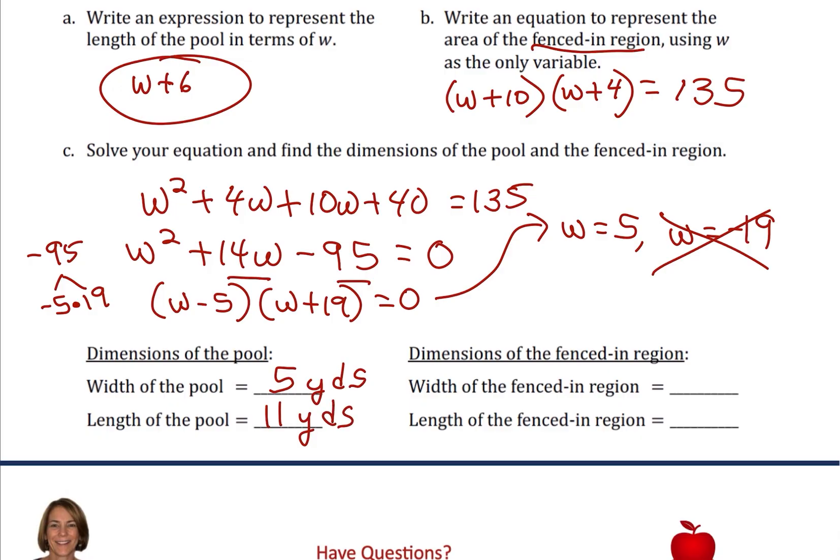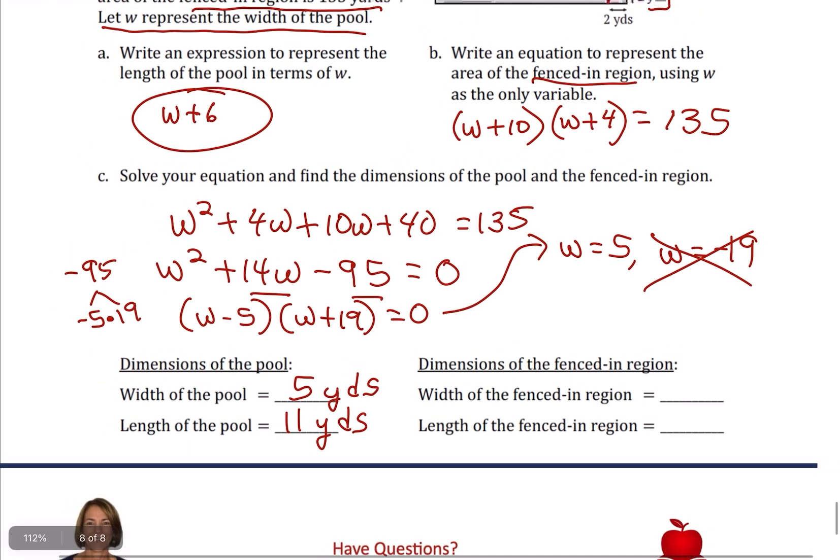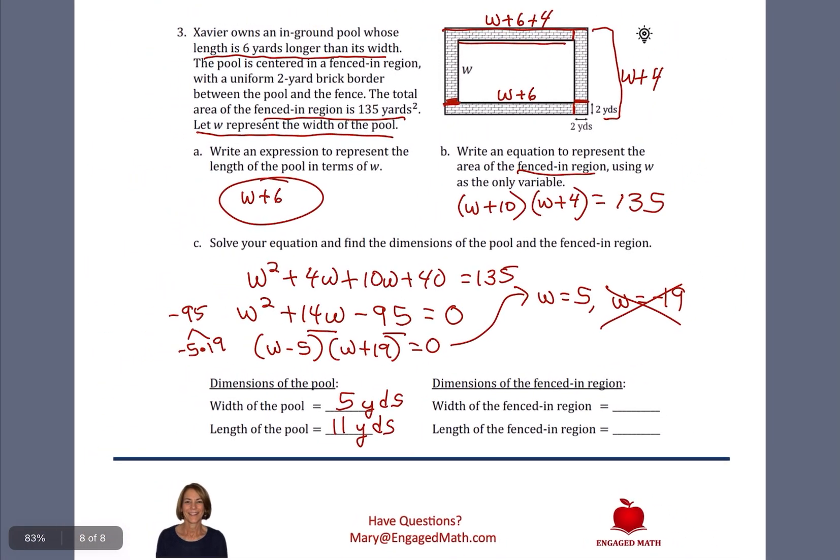And then the width of the fenced-in region, I'm going to go back to the original now for this last part. If we go back to our drawing, remember that the fenced-in region has that border all the way around it. So the width was W plus 4. So the width of the fenced-in region is going to be 9 yards. And the length of the fenced-in region is going to be the answer that we got for W of 5. It's going to be 5 plus 6 plus 4, so 5 plus 10, which is going to be 15 yards. And we have found everything that we were requested to find.